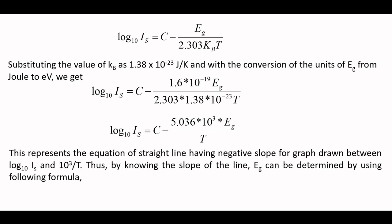This equation represents a straight line having a negative slope for a graph drawn between log of Is and 10 to the power 3 upon T. Thus, by knowing the slope of the line, Eg can be determined by using the formula Eg equals minus slope upon 5.036.